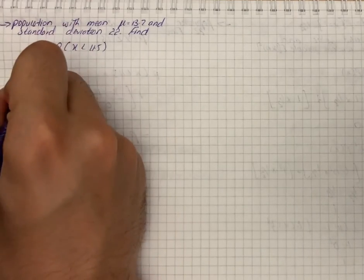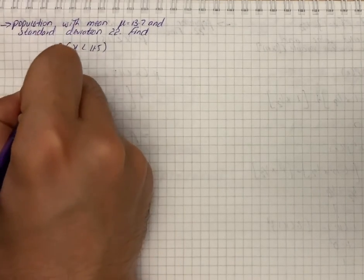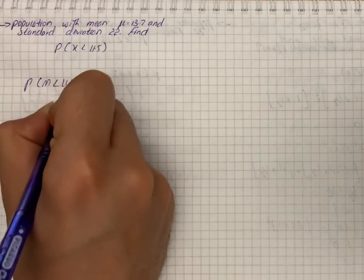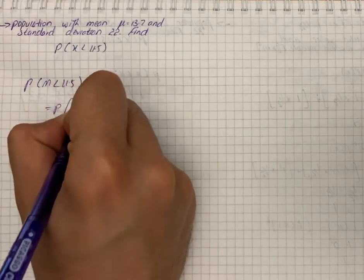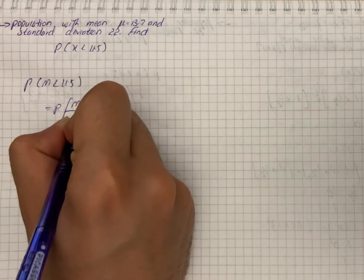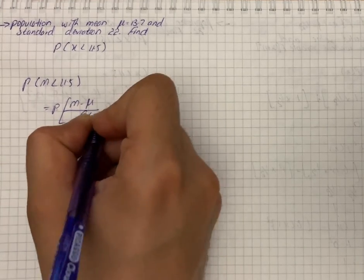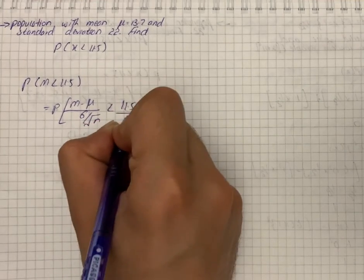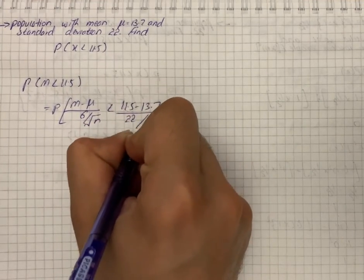We can write that P(M < 11.5) is equal to P of M minus the mean divided by standard deviation divided by the sample size, less than 11.5 minus 13.7 divided by 22 divided by the square root of 78.